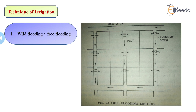The agricultural field is divided into a number of plots or laterals, so the water can be flooded or discharged successively all over the surface of the plot.